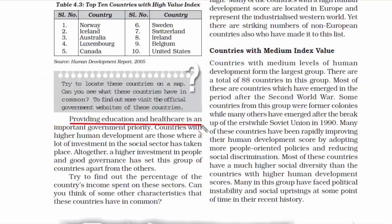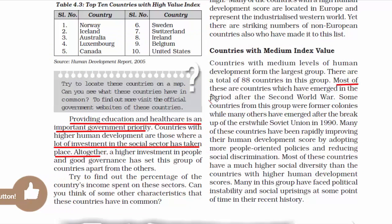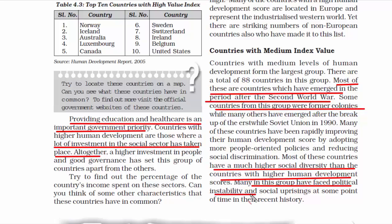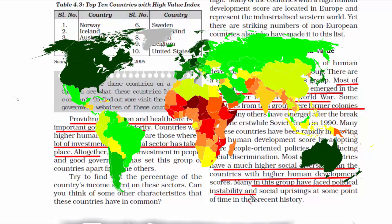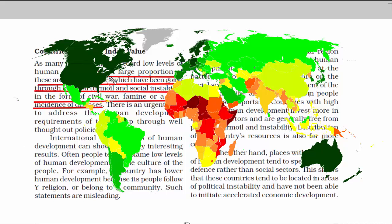Countries with medium HDI value have a score of 0.6 to 0.8. Most of these are countries that emerged after the Second World War, and some were former colonies. In these countries, you will find social discrimination and poor public policies, but they are slowly improving. Most have much higher social diversity — meaning people from various ethnic backgrounds, cultures, and communities reside together. Countries with low HDI have a score below 0.6. A large proportion are small countries going through political turmoil, civil war, famine, or high incidence of diseases — mostly African and a few Asian countries.